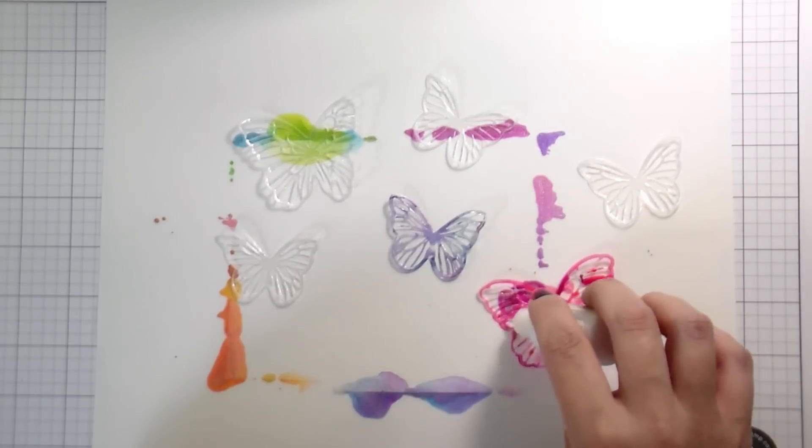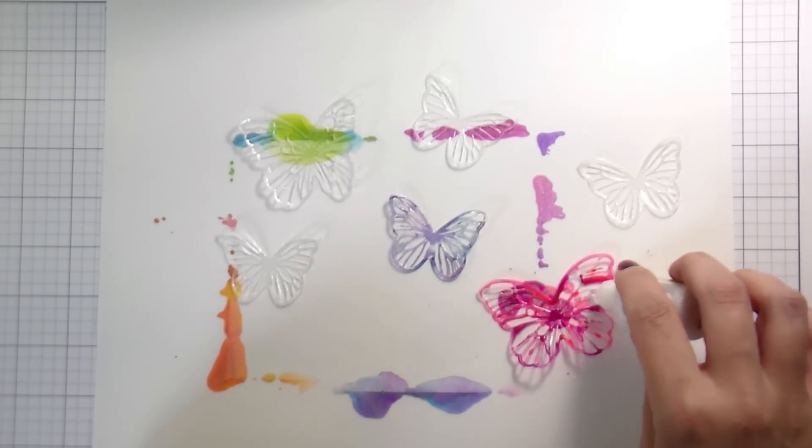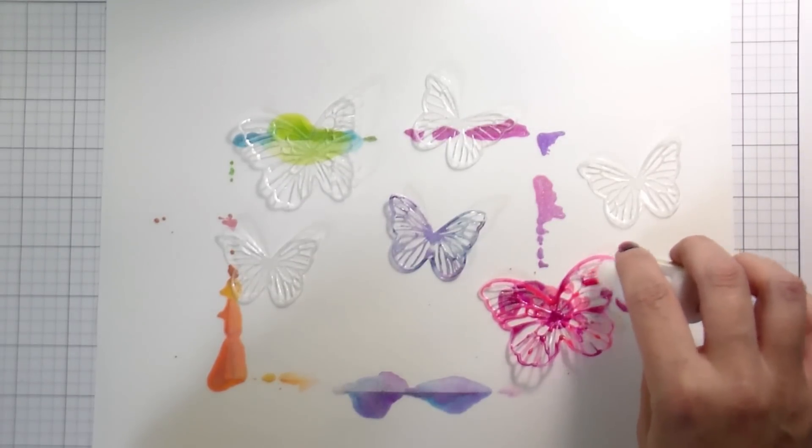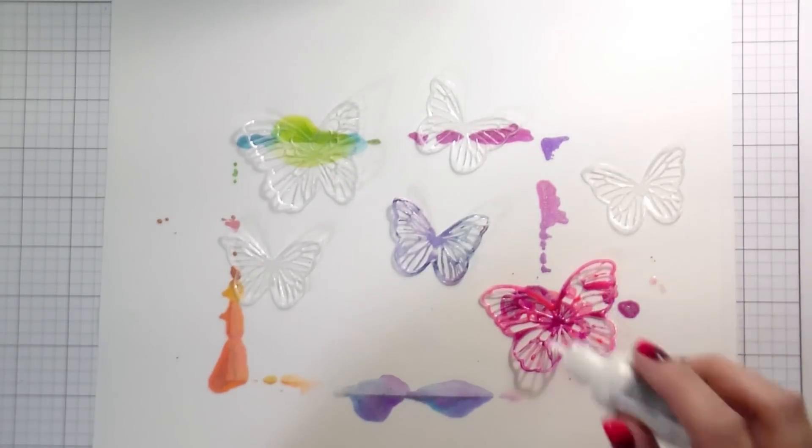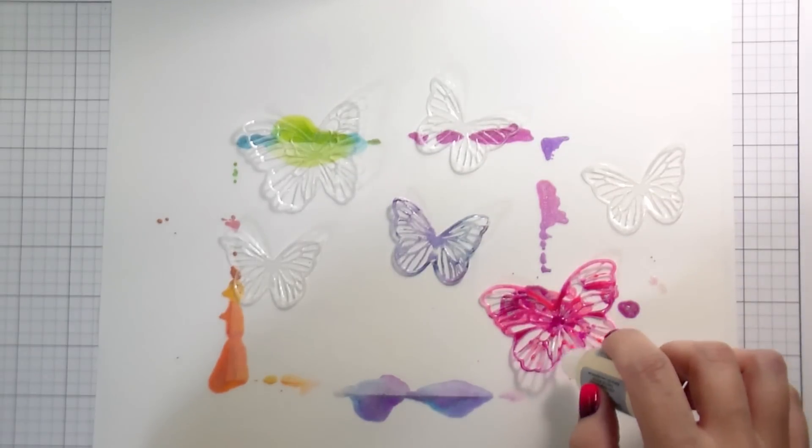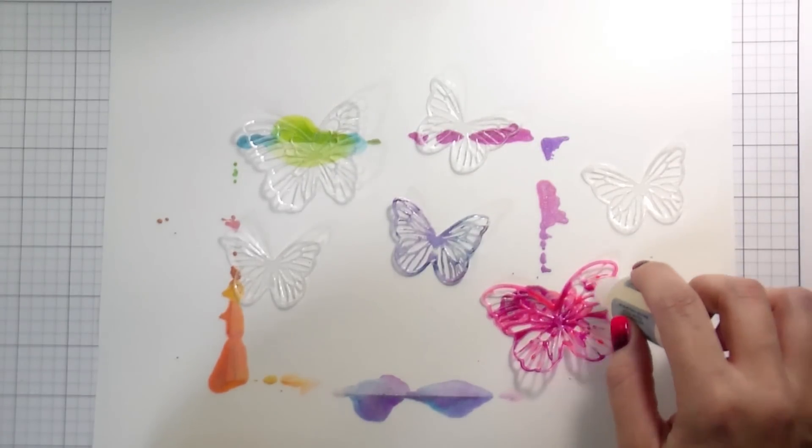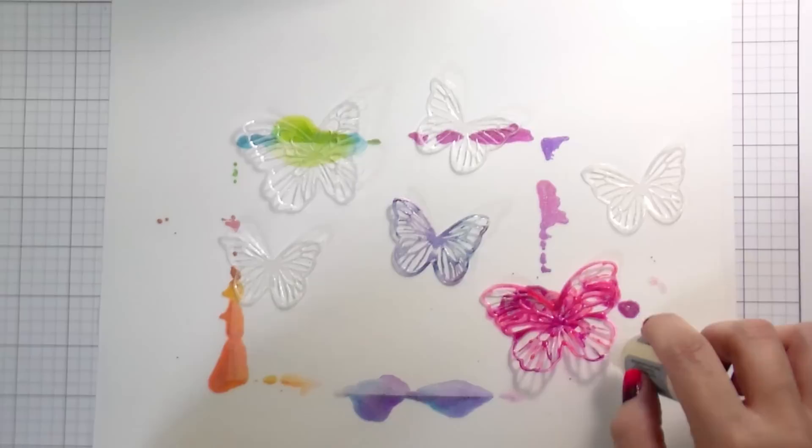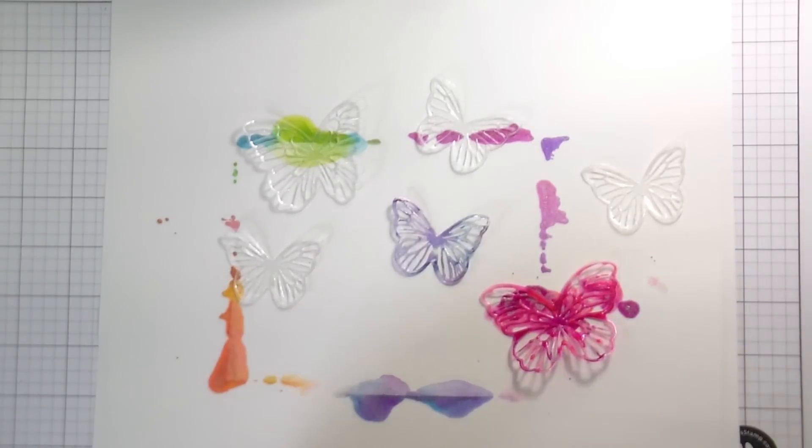I did still use my pearl mixative. On this first one, I used the alcohol blender solution, but I found that it made my color too light. And I didn't like it. I liked the bolder look. So if you're going for something more pastel, please use the blender solution. If you're looking for a bolder color, skip it. You don't need it. They will mix together on their own as they're flowing around the acetate.